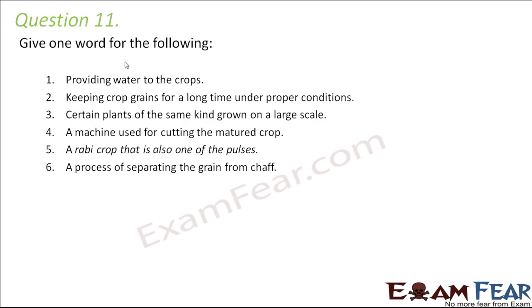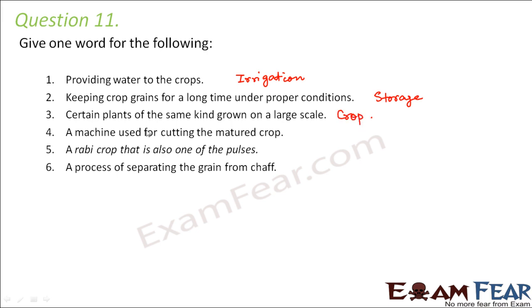Question number eleven: give one word for the following. Artificially providing water to crops — that is called irrigation. Keeping crop grains for a long time until proper conditions — that is called storage, keeping them protected from insects or microbes. Certain plants of the same kind grown on a large scale — that is called a crop. A machine used for cutting the matured crop — that is called a harvester. A rabi crop that is also a pulse — that is gram.